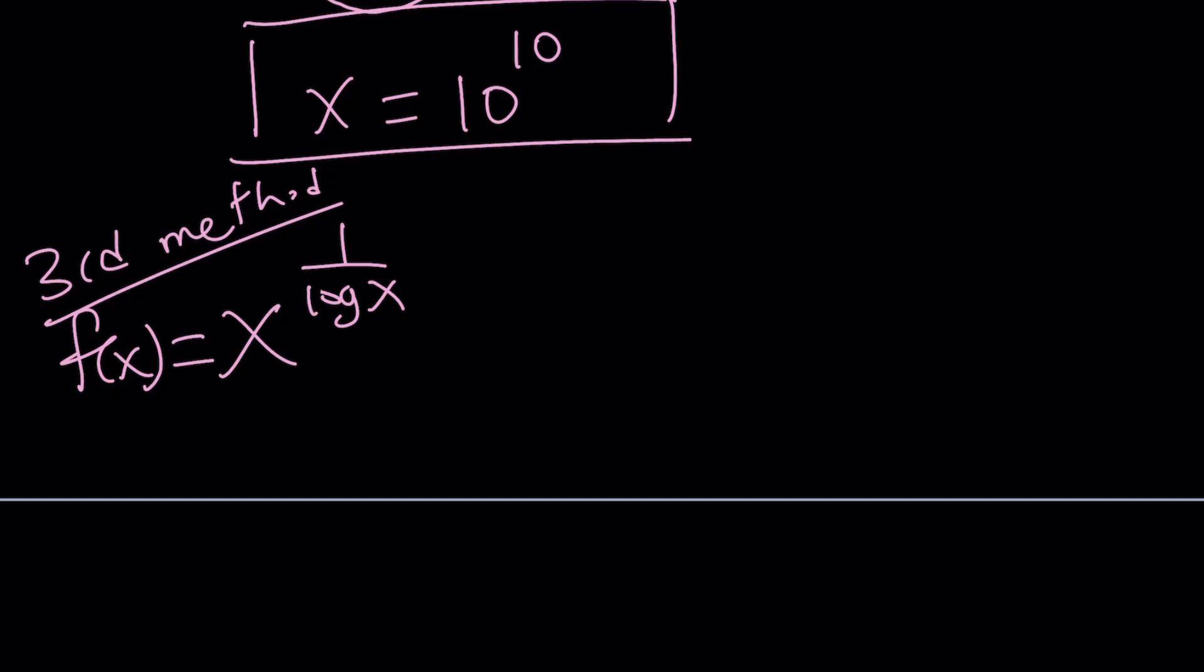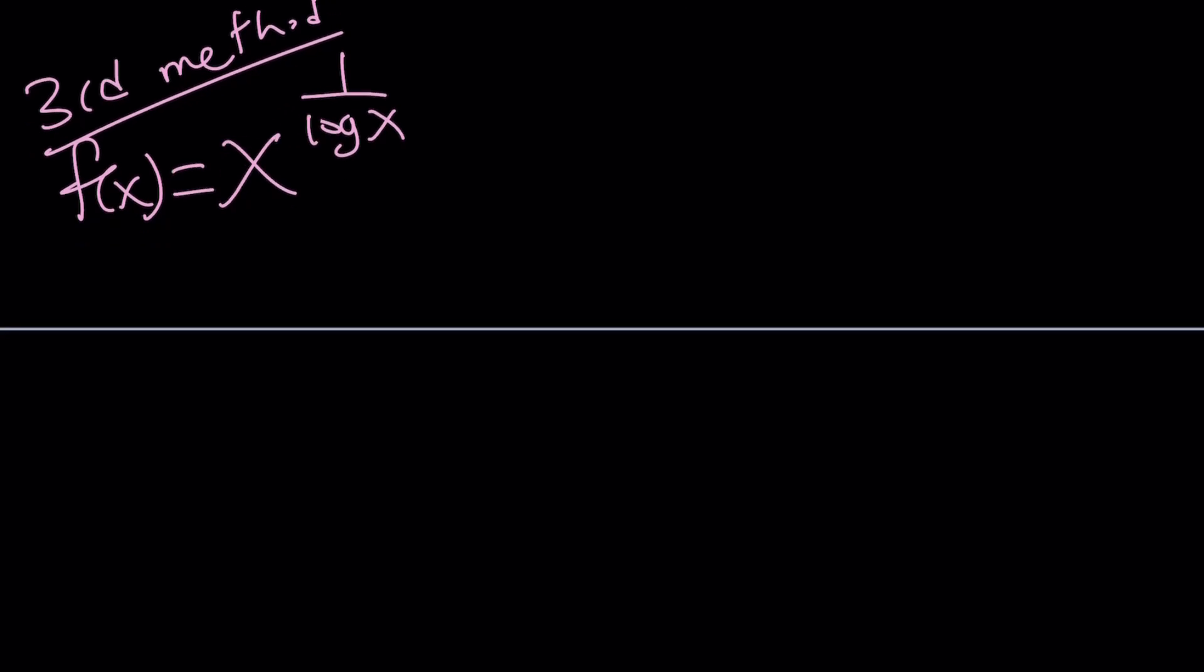And then we can basically log both sides again to understand what is going on with f of x. But notice that you've probably seen expressions like x to the power log x equals, I don't know, 10 to the power something. And you can log both sides and solve this problem easily, right? Let's say this is 10 to the fourth. We log both sides and we get log x squared equals 4, so on and so forth. But this is different. This is x to the power 1 over log x. So, you can kind of write it in several different ways. Let's go ahead and log both sides first. That's going to be my first approach under third method. So, log f of x equals log x to the power 1 over log x.